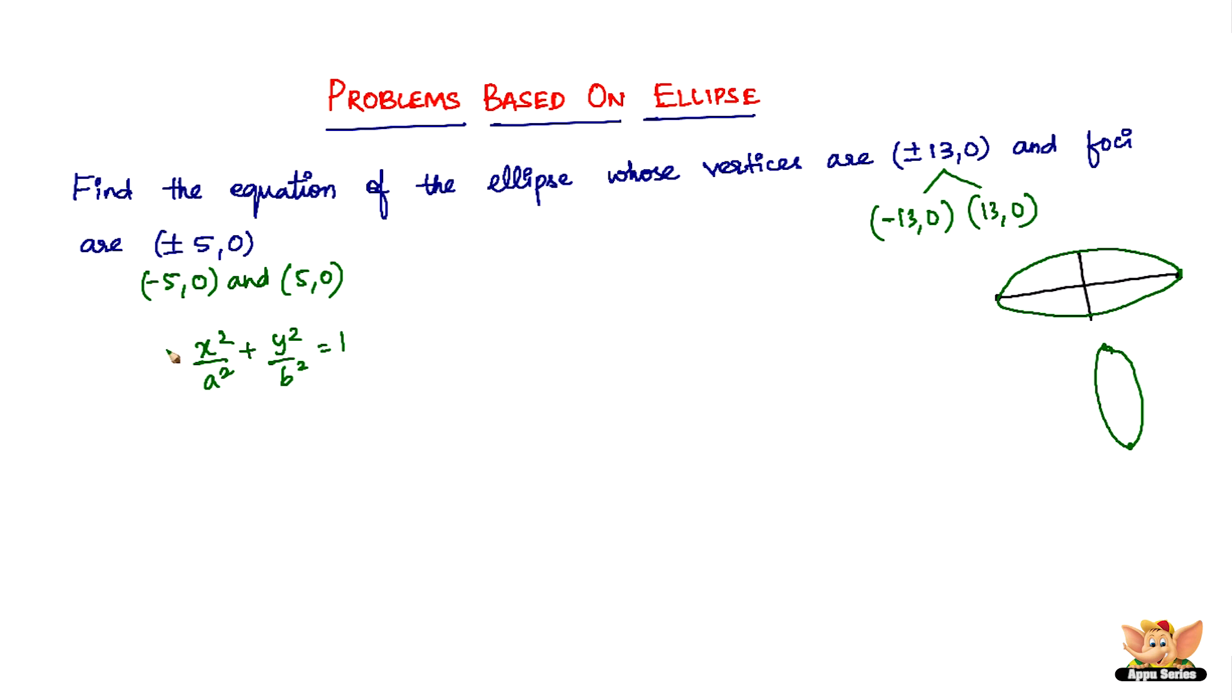Now we know it is of this form, and we've got the values of a which equals 13 and c which equals 5. All that we have to find now is b to complete this equation. So all we have to do is just find b.